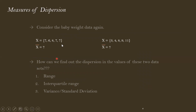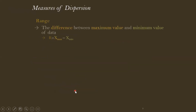We are going to discuss three major measures of dispersion: range, interquartile range, and variance/standard deviation. The range is simply the difference between the maximum value and the minimum value in the data.